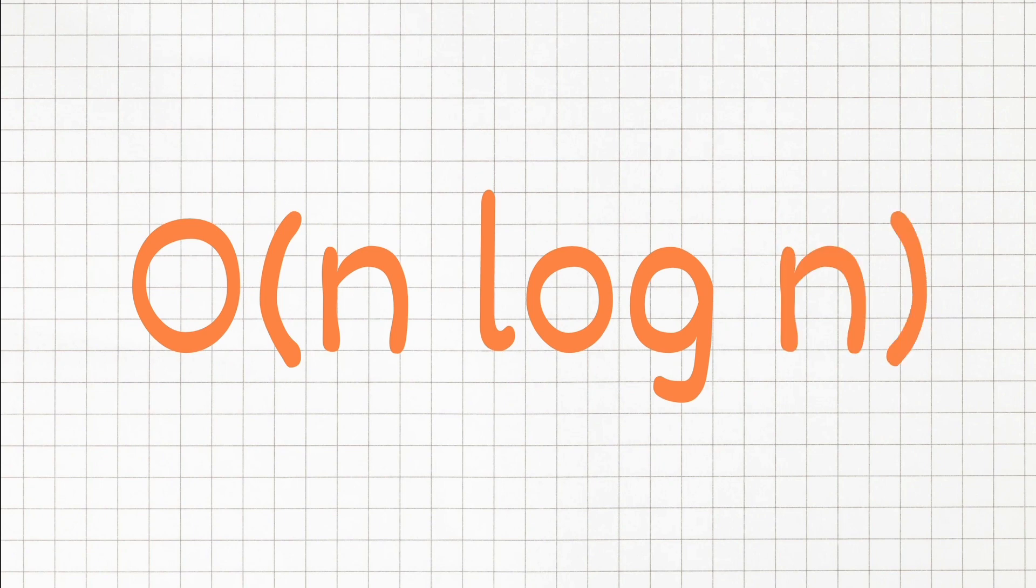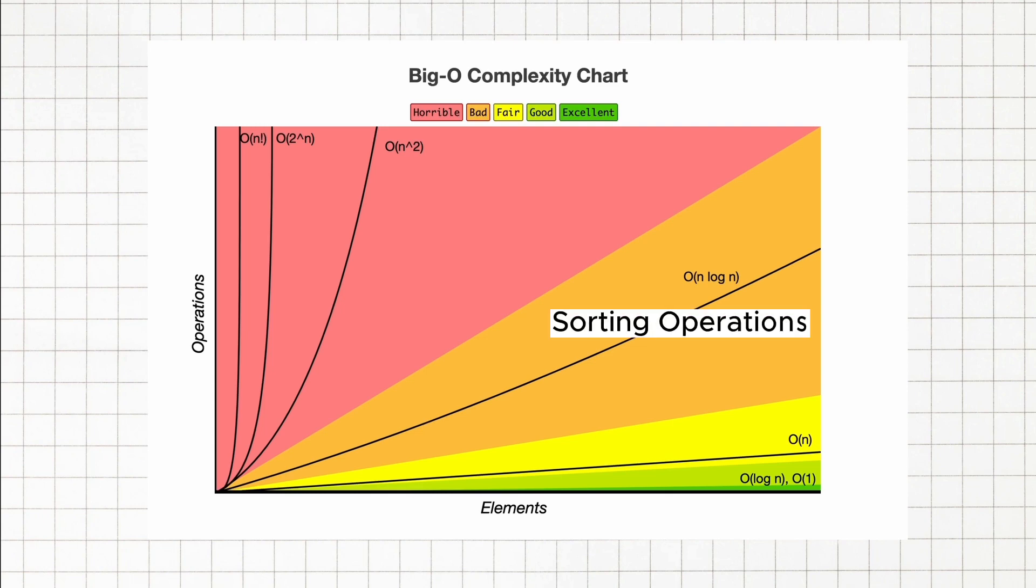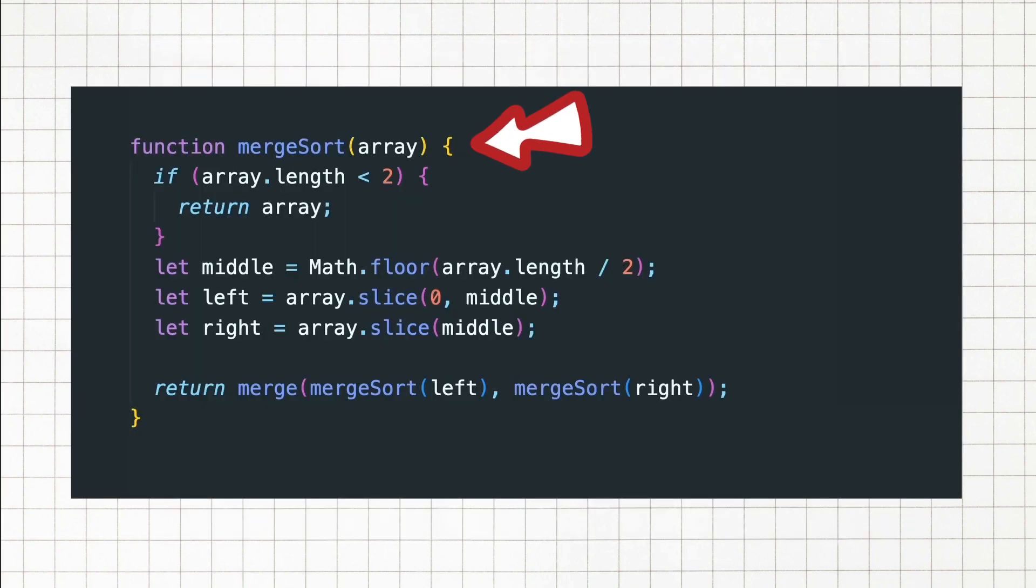For more complex operations, we have O of n log n, or log linear time complexity. This is usually the case for sorting operations. It's like sorting our items in a certain order before finding the specific item. For example, merge sort that we have here.